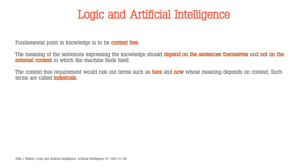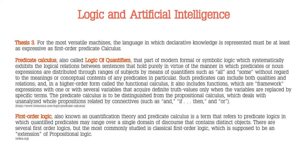The context-free is extremely important because the machine should not have any possible relationship with 'here and now' which depends on the context. Those issues are called indexicals. Every time you discuss artificial intelligence and the logic beside it, remember very well that there is no possible ambiguity about here and now — ambiguity between data which means something in one country and something different in another country, for example the idea of friendship. This kind of ambiguity, this relationship with a specific context, in artificial intelligence should not exist.